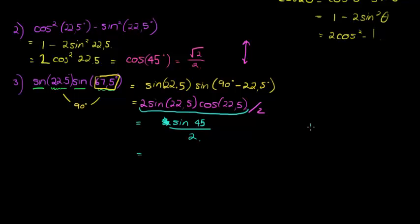And sine of 45 is square root of two over two, but I still have to divide with another two. So I'm dividing with two twice, which means I'm actually dividing with four. So this is square root of two over four. Cool.